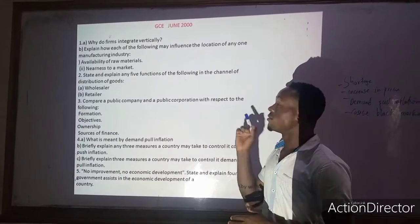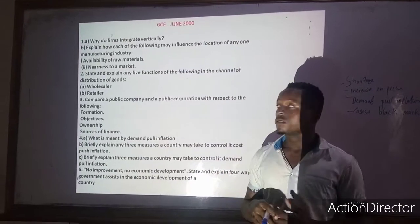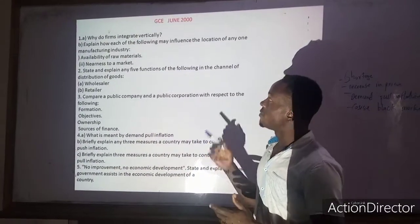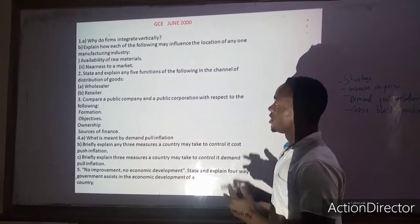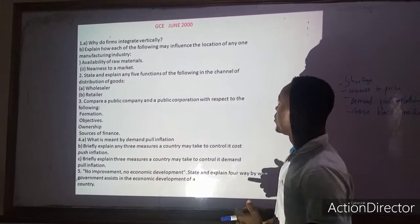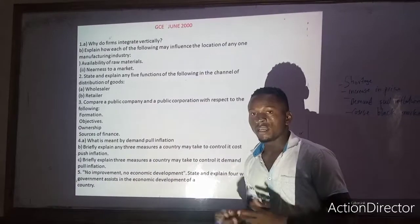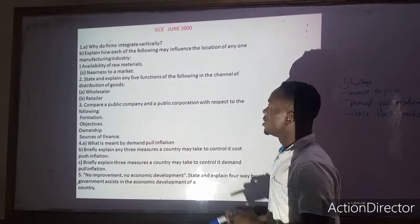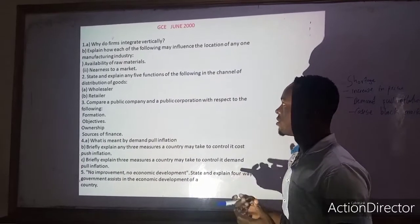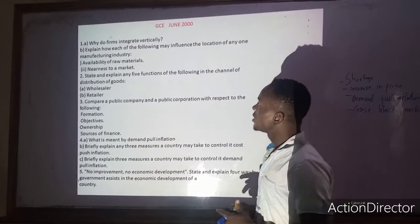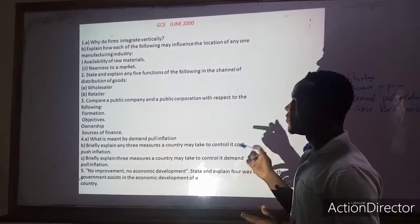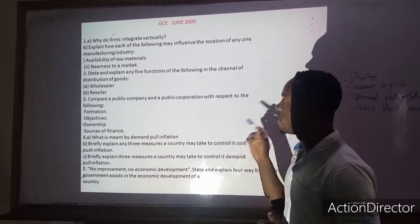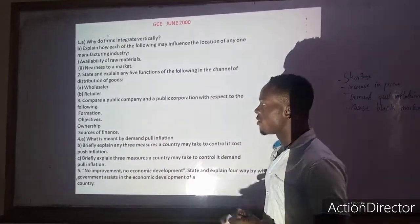In June 2000, they asked several questions. They explained how each of the following would influence the location of an industry. They talked about availability of raw materials and nearness to market. In question 2, they asked us to explain five functions of the wholesaler and the retailer, and also asked us to compare between a public company and a public corporation.